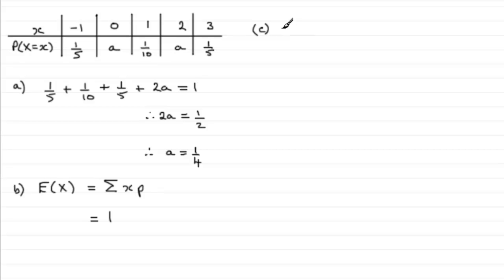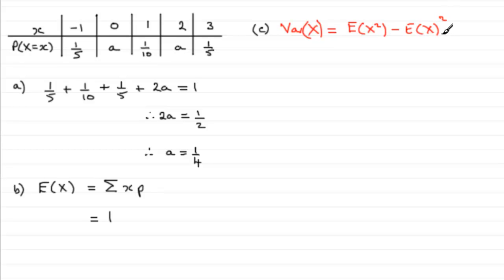Now for part C, you've got to work out the variance of X. You should know that the variance of a random variable X from a discrete distribution table is given by E(X²) minus E(X) all squared. We know what E(X) is — it's the 1 we just worked out. But what about E(X²)? We need to work that out first.